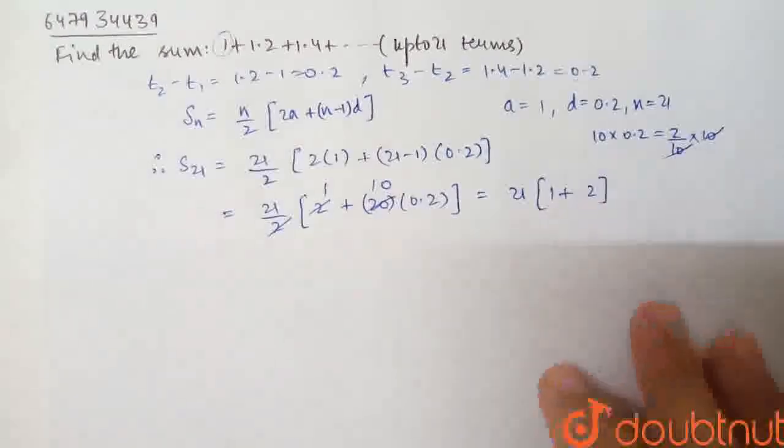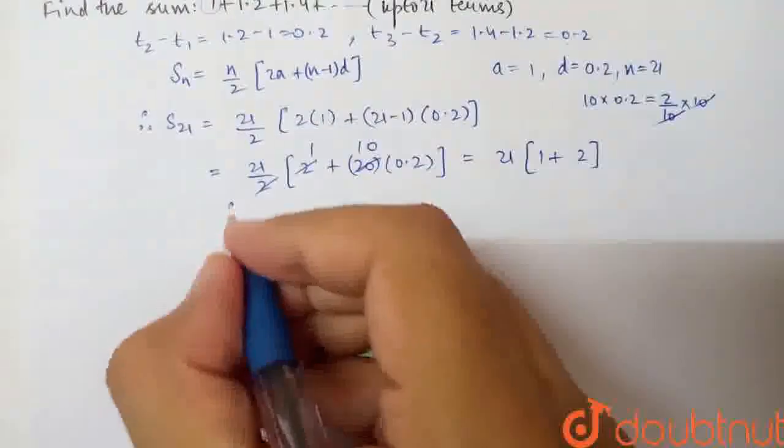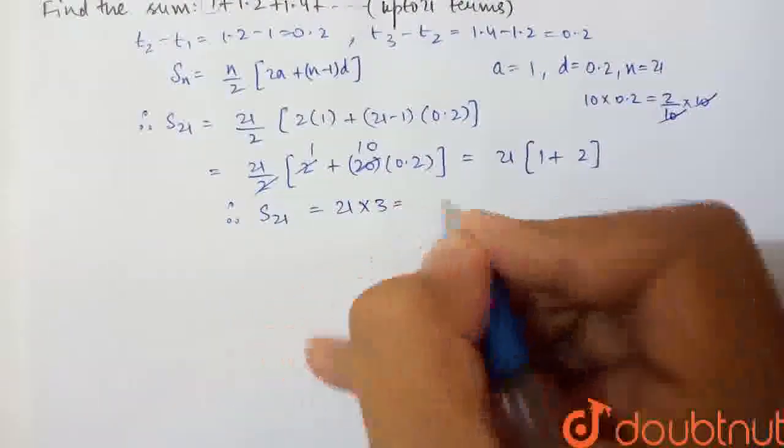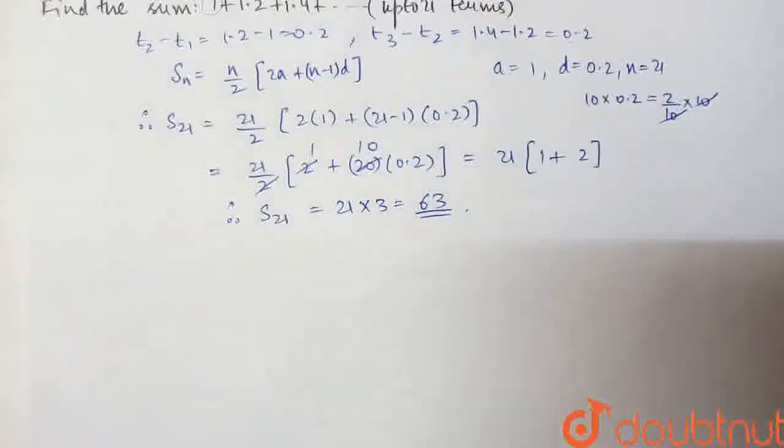So 2 + 1 equals 3, times 21. Therefore, sum of 21 terms equals 21 × 3, which is 63.